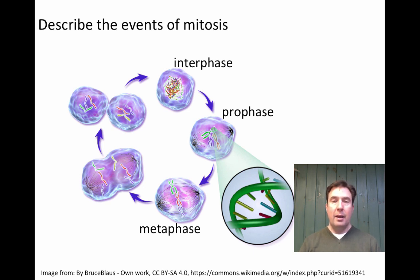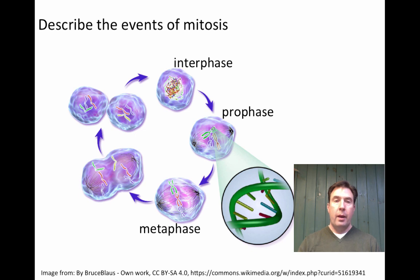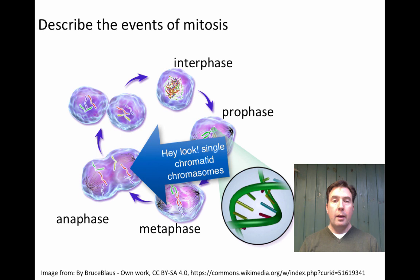During metaphase, the chromosomes line up in a single row through the middle of the cell at what is called the metaphase plate. The centromeres are attached to spindle fibers at this point. Then we move into anaphase, where the sister chromatids are pulled apart so that each pole — which will become a future daughter cell — receives one copy of the genetic information from each original chromosome.